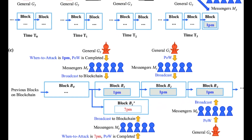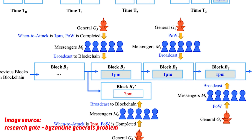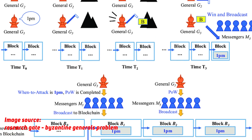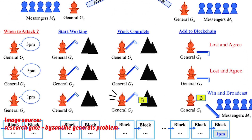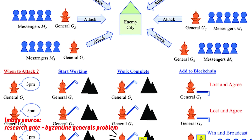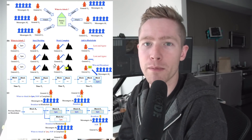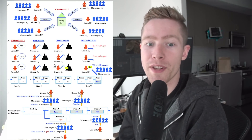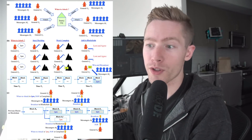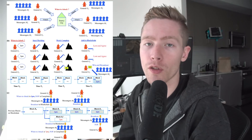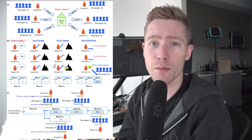Let's get back to understanding blockchain technology. If there's one thing that will really help you understand Bitcoin and blockchain, it's the Byzantine Generals problem. The Byzantine Generals problem was unsolved until Satoshi Nakamoto invented blockchain. If you can grasp the Byzantine Generals problem and how it works, you are going to have diamond hands.